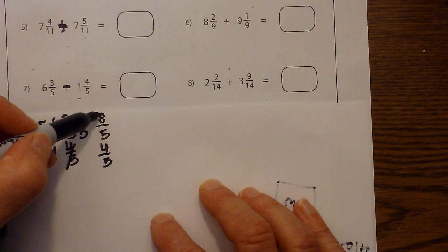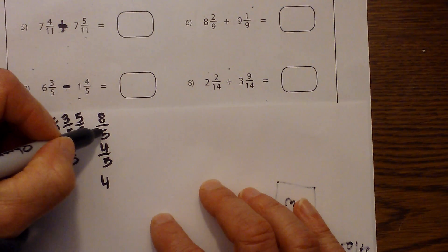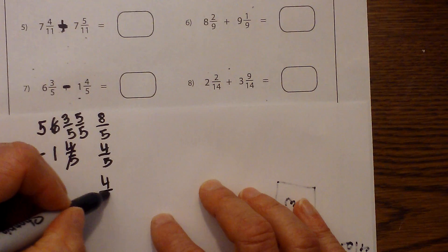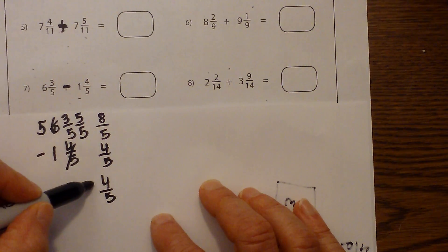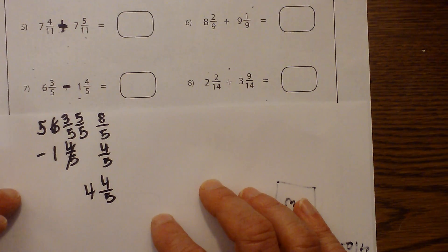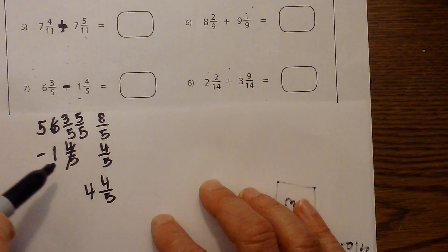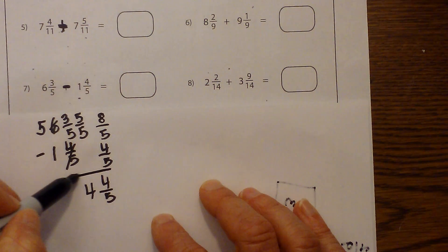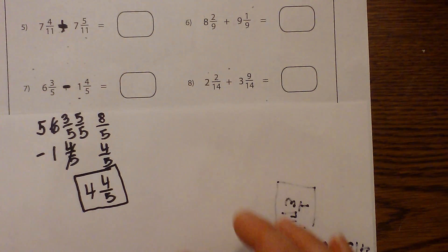And now I just subtract. 8 minus 4 is 4. And the denominator remains the same, 5 and 5. So that will become the 5. And then I subtract 5 minus 1, and that becomes a 4. And this is simplified because 5 is a prime number. And we can't do anything else with the 4. So there we go. It is 4 and 4 fifths.